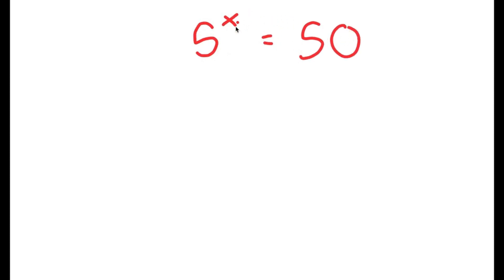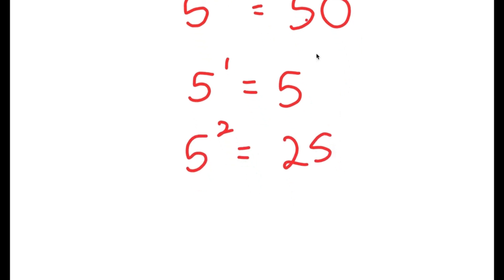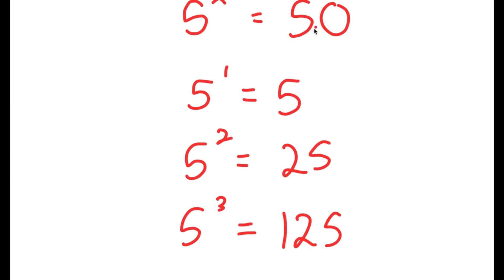To start with this problem, let's test different values of x. If x is 1, then I get 5 to the power of 1, which is equal to 5 — this is too low. If x equals 2, I get 5 to the power of 2, which is 25 — again too low. If x equals 3, then I have 5 to the power of 3, which is 125 — and this is way too high.